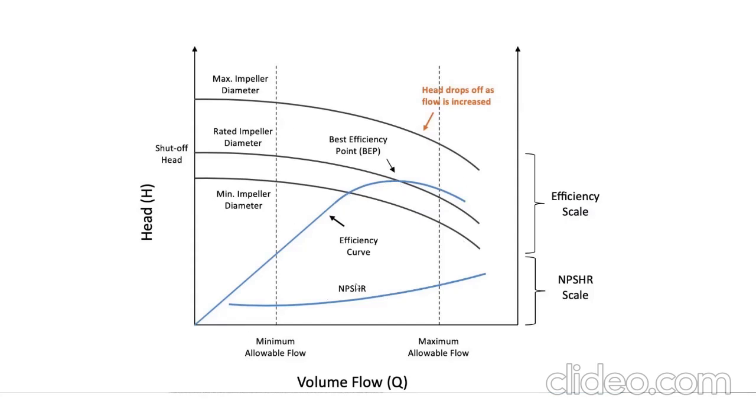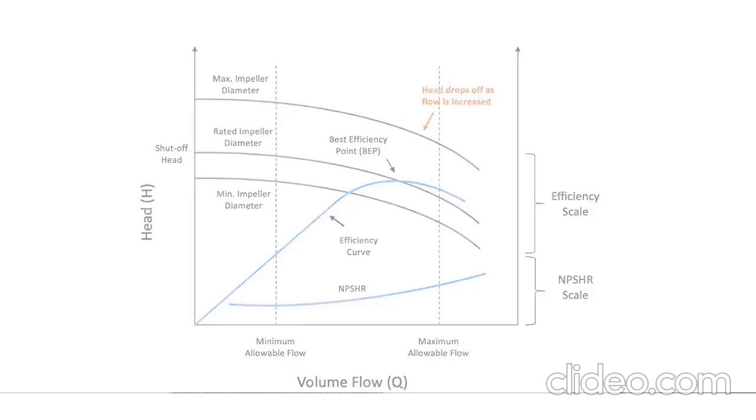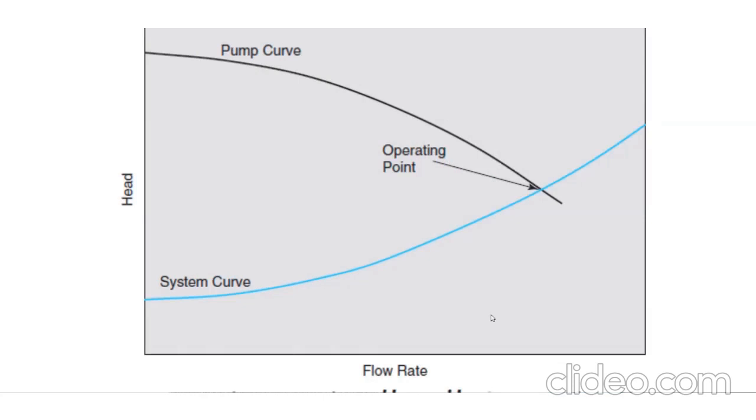This is the pump characteristic curve. Now we understand both the system curve and the pump curve. When we overlap both curves, we get the final operating point. This is the point where both curves intersect each other.